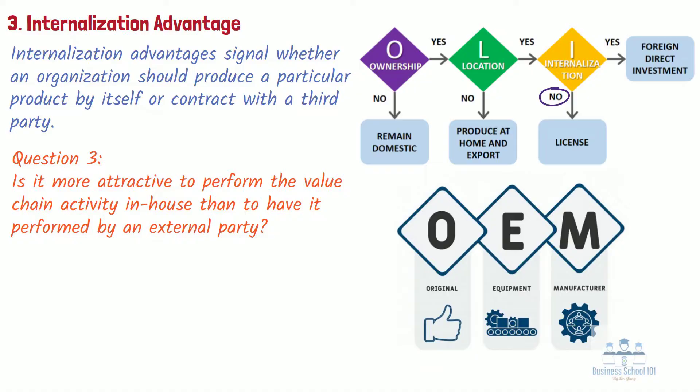Reasons to outsource certain activities to different companies abroad might be because they are better at it, can do it cheaper, have more local market knowledge, or because management simply wants to focus on other activities in the value chain such as marketing or design. However, if the answer is yes, the firm should keep control over its activities and engage in foreign direct investment. This could be done through forming joint ventures with local partners, acquiring existing local companies, or establishing a wholly owned subsidiary.